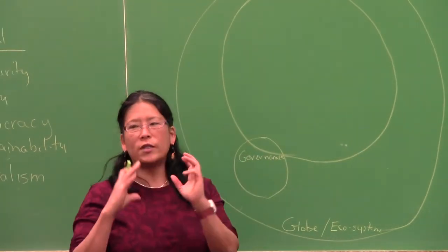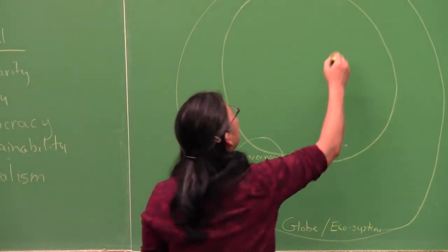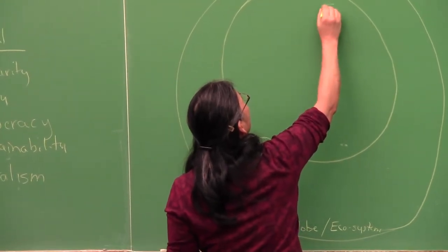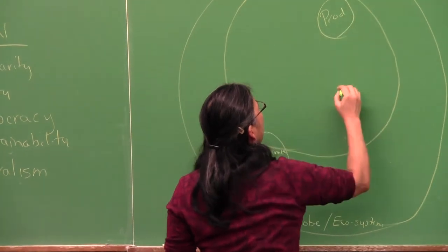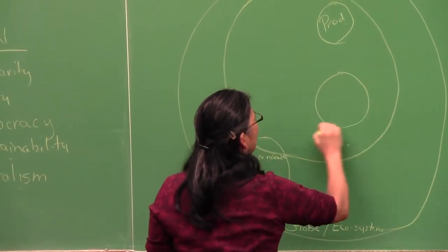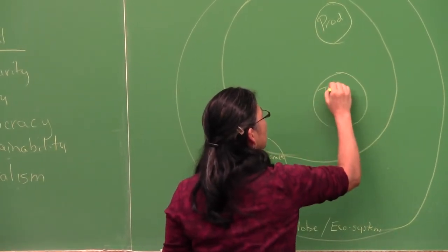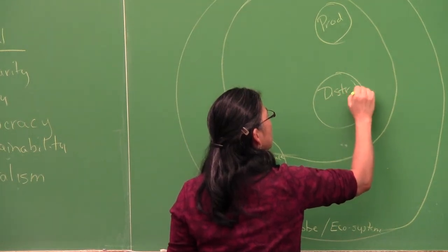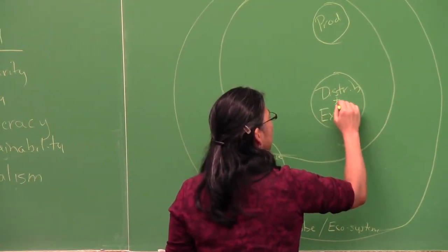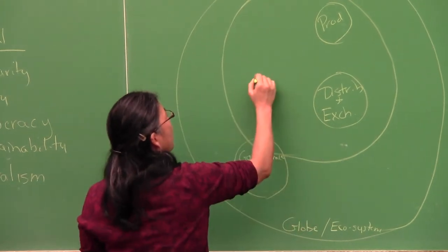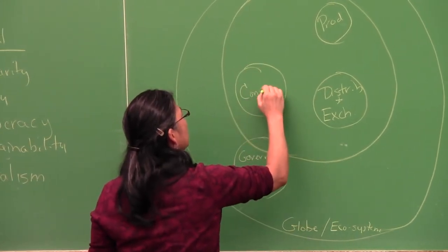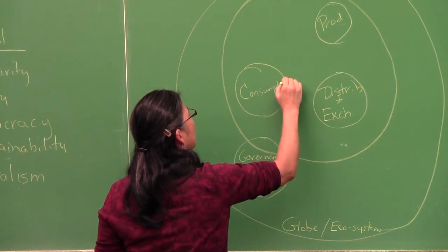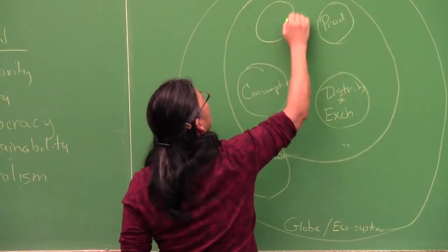And then we have these four spheres, four economic spheres. So we have production, we have distribution and exchange, we have consumption, and we have finance.